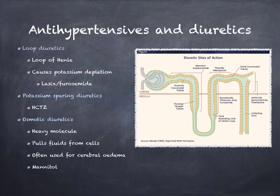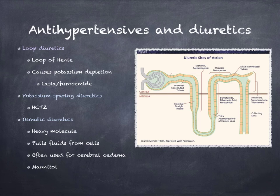Some patients are given HCTZ (hydrochlorothiazide), a thiazide-type diuretic, instead of Lasix. It does not cause depletion of potassium — it is potassium-sparing. It works in the distal convoluted collecting tubule rather than the loop of Henle. Because it holds onto potassium, hyperkalemia can be a problem, particularly in patients who take salt substitutes, which are very high in potassium.